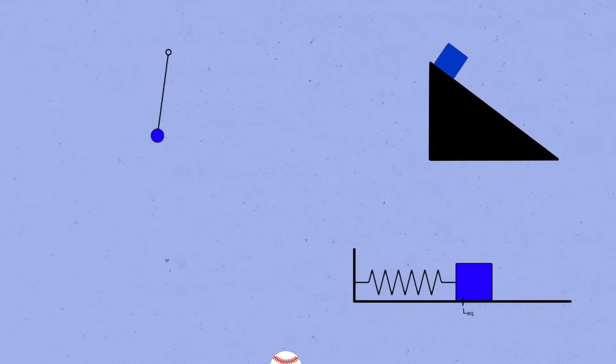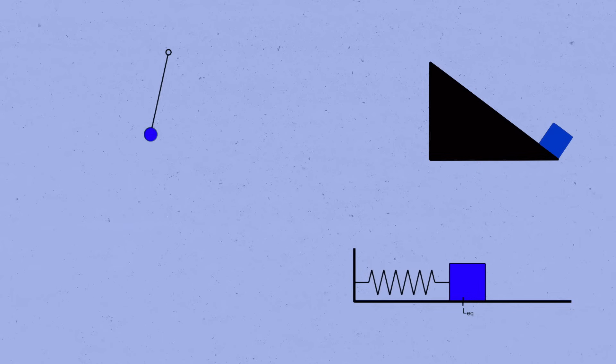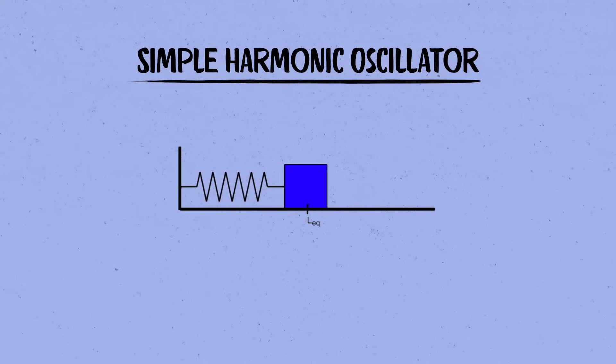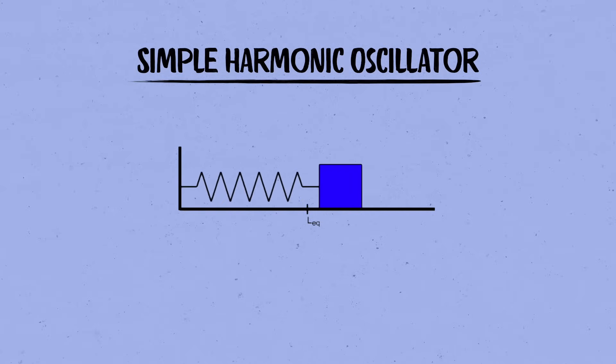Of all the systems you're likely to meet in your first physics class, far and away the most important is the simple harmonic oscillator. In other words, the basic setup of a block attached to a spring.